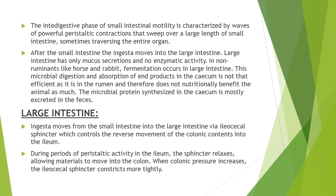During the interdigestive phase of small intestinal motility, strong waves of peristaltic contractions sweep over a large length of the small intestine, sometimes traversing the entire organ. This type of powerful wave is referred to as the migrating motility complex or migrating myoelectric complex. These complexes begin in the duodenum as a group of slow waves and then stimulate intense action potential and muscular contraction activity. This complex migrates down the intestine; some die out before reaching the ileum but some travel the entire length of the small intestine.